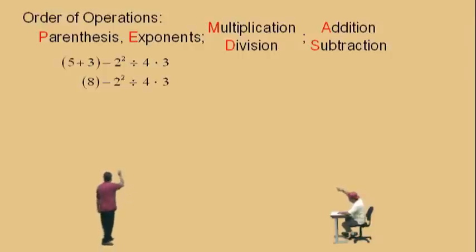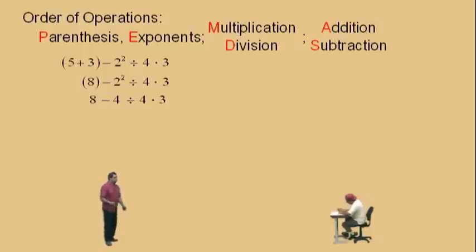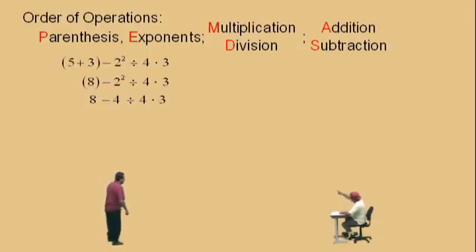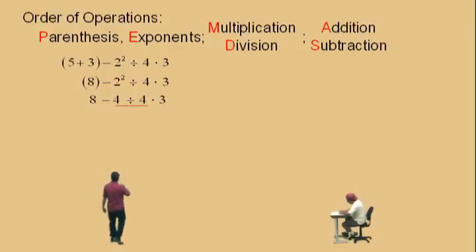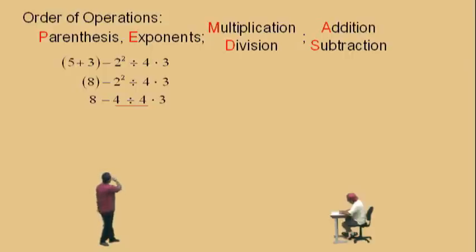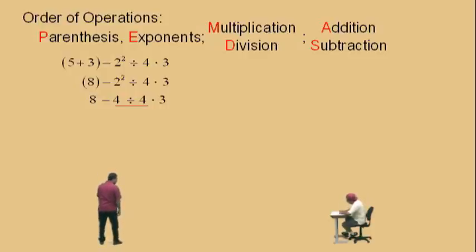Yes, 2 squared. So we'll do that first — that's 4. Bring down our 8's to track 4 and bring down the rest of our work. Now, no more exponents, so we're looking at our multiplication and divisions. Do we have multiplications and divisions? Yes. Now working left to right, which one comes first? Division. The division. So we have to do that operation first. And that's not a negative 4 — it's 8 subtract 4 divided by 4 times 3. So we have to do the 4 divided by 4 first. What's 4 divided by 4? That's 1. That's an easy one. And bring down your work.